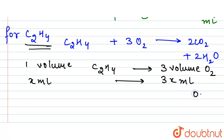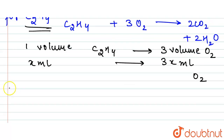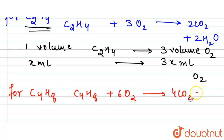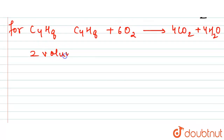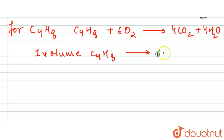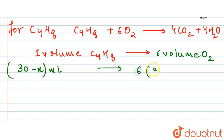For C₄H₈, which is butylene, the combustion reaction is: C₄H₈ + 6O₂ → 4CO₂ + 4H₂O. One volume of C₄H₈ requires 6 volumes of O₂. So for 30 minus x ml of butylene, it will require 6 × (30 − x) ml of O₂.